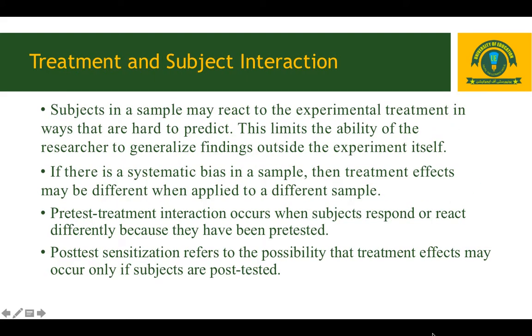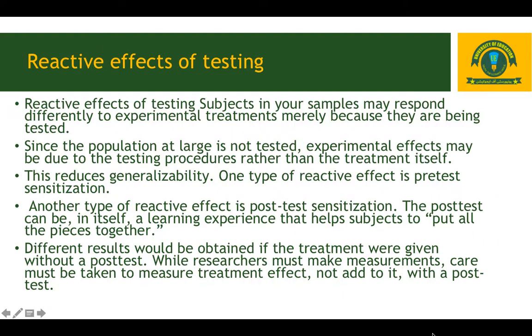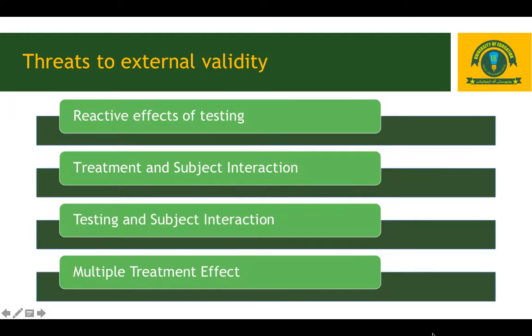We have discussed the threats to external validity: reactive effects of testing, treatment and subject interaction, testing and subject interaction, and multiple treatment effects. These four major threats can affect the external validity and generalizability of experimental research findings.